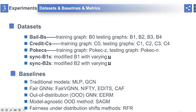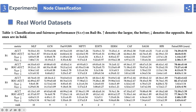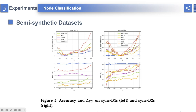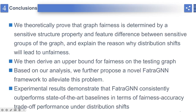We use five datasets to evaluate the performance and compare our model with nine baselines. As shown in the table and figure, FATRA GNN outperforms all baselines in most cases. In conclusion, we study the unfairness problem under distribution shifts on graphs. We theoretically prove that graph fairness is determined by a sensitive structure property and feature difference between sensitive groups of the graph, and explain the reason why distribution shifts will lead to unfairness. We then derive an upper bound for fairness on the testing graph. Based on our analysis, we further propose a novel FATRA GNN framework to alleviate this problem. Experimental results demonstrate the effectiveness of FATRA GNN.